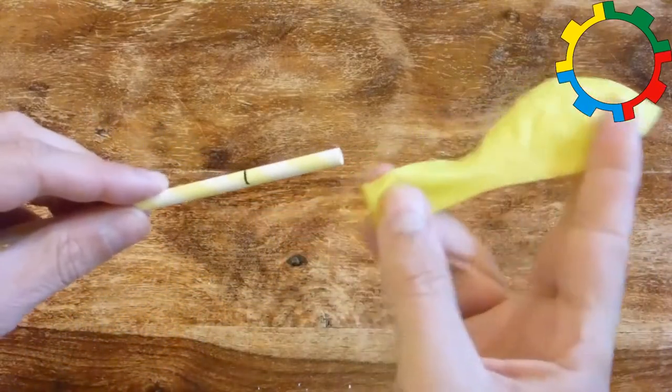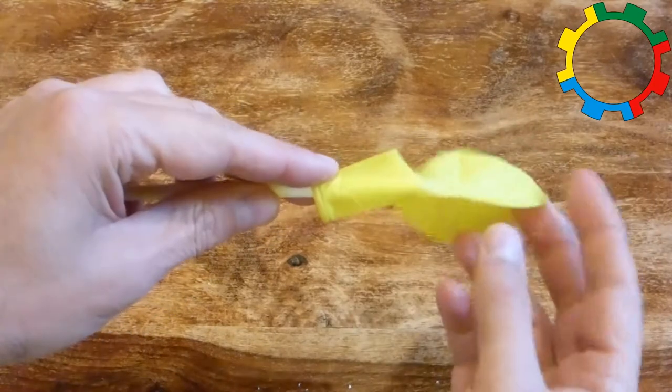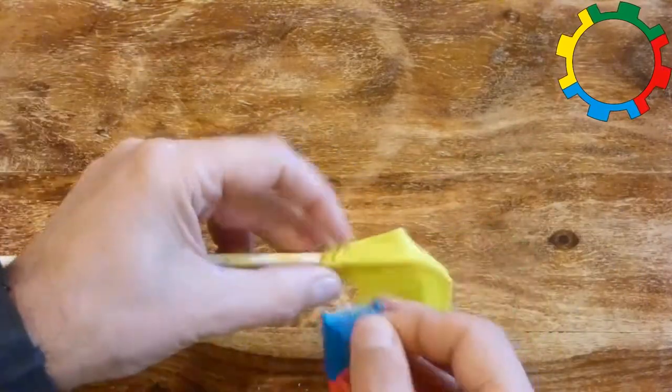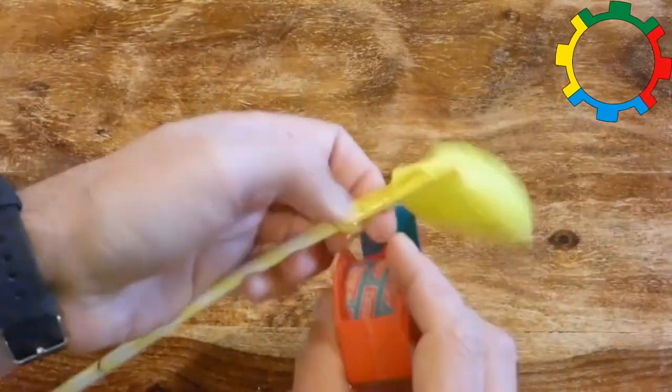Slip the balloon's open end over one end of the straw and fold it as tightly as possible around the straw. Wrap the sticky tape as tightly as possible around the folded neck of the balloon and the straw.